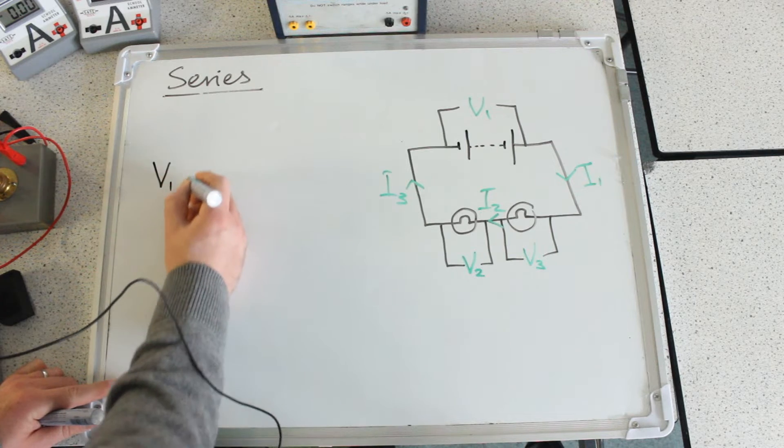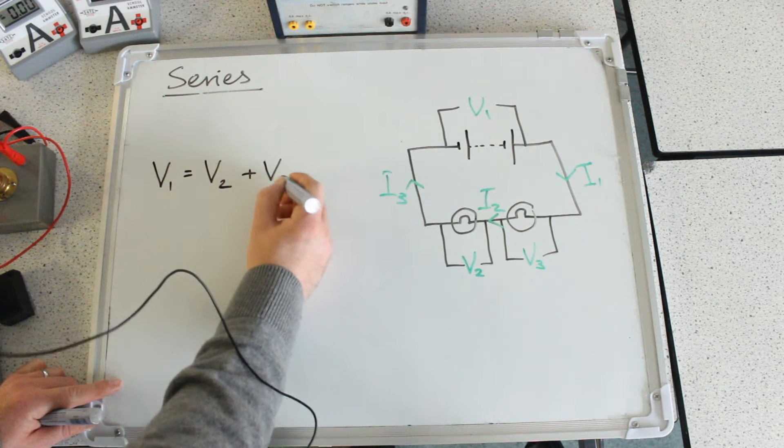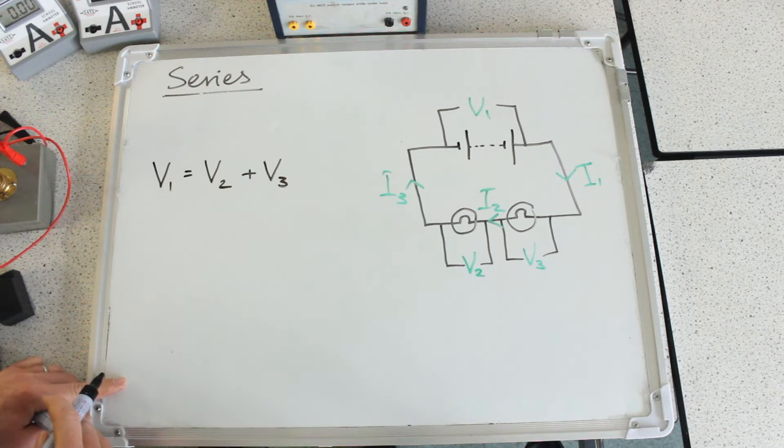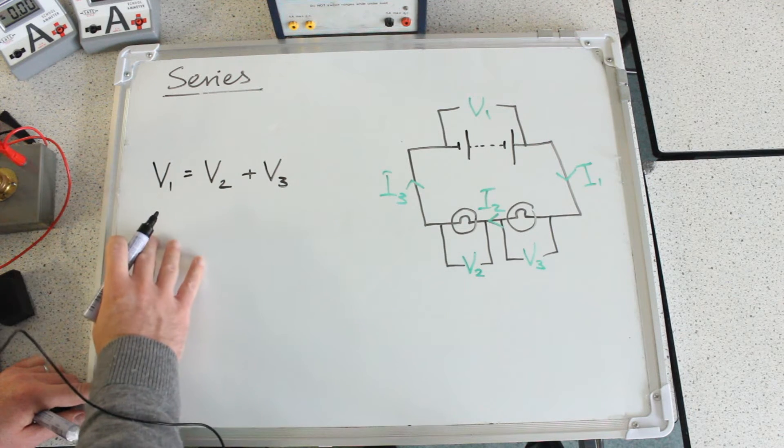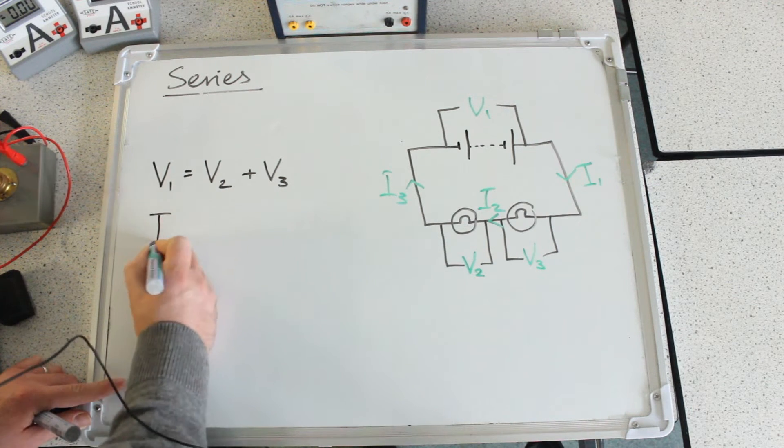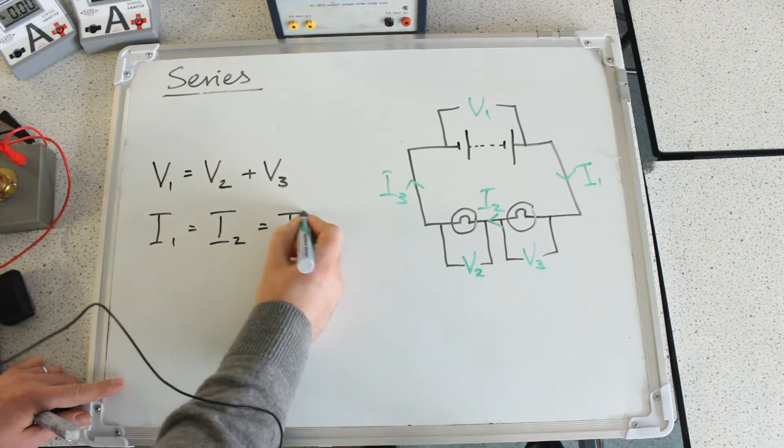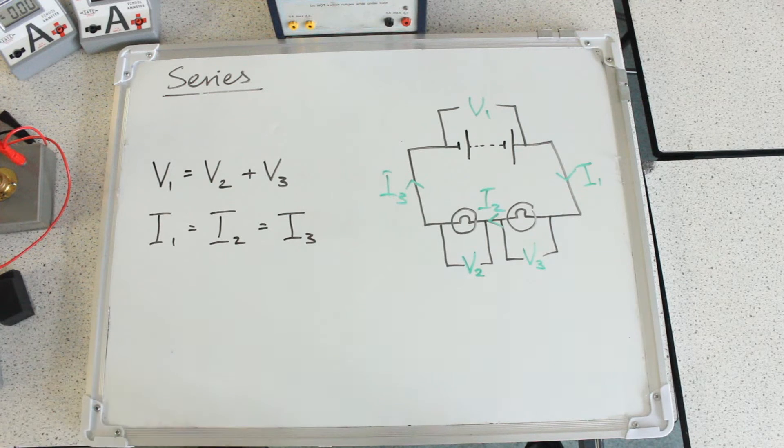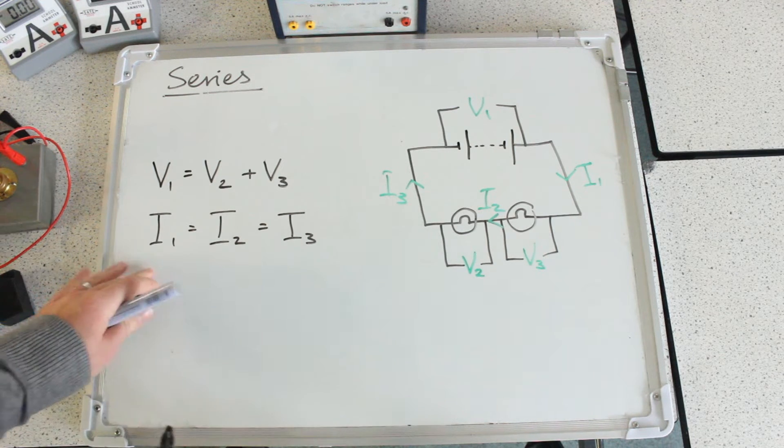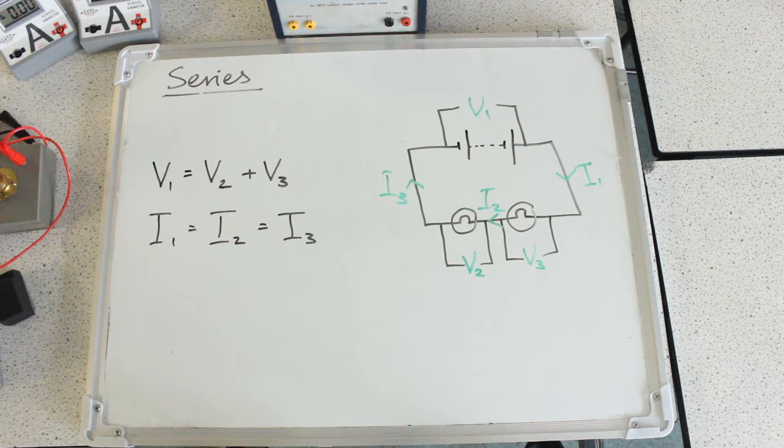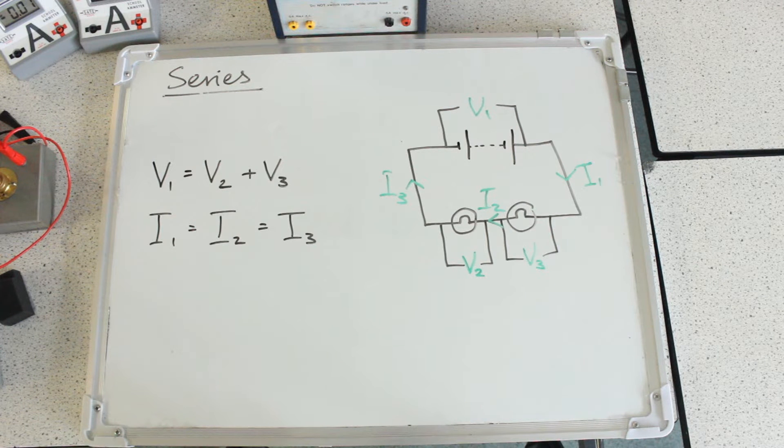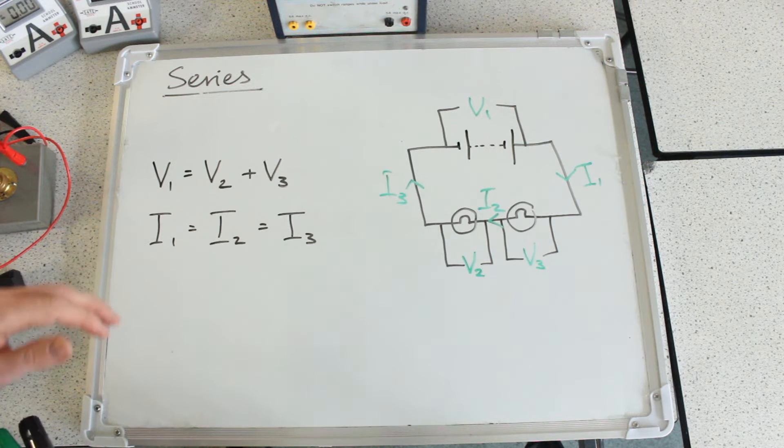Which are in series circuits, V1 equals V2 plus V3. And for the currents, they are the same everywhere, so we write I1 equals I2 equals I3. And that's all you need to know, that is all you need to remember for your series loops for currents and for voltages.